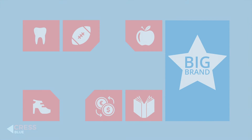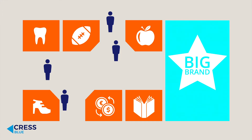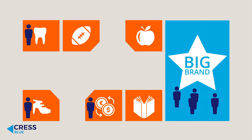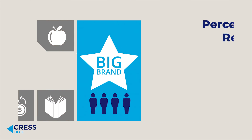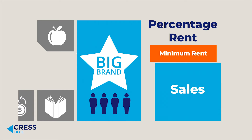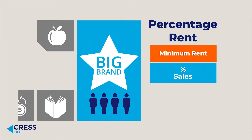In retail spaces like shopping malls, many factors like anchor tenants and the number of visitors can make a tenant's monthly sales vary wildly, hence the use of percentage rents. Here, the lease specifies a minimum rent, and above a defined breakpoint, a percentage of the tenant's sales from the premises is paid to the landlord as rent.